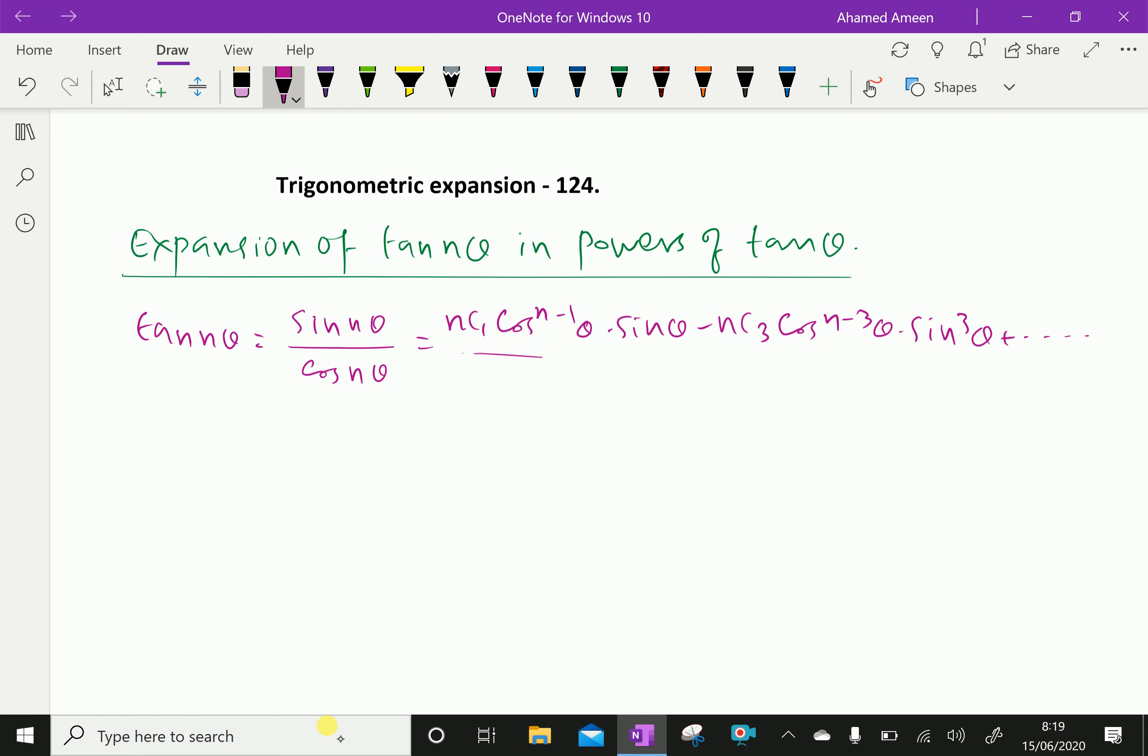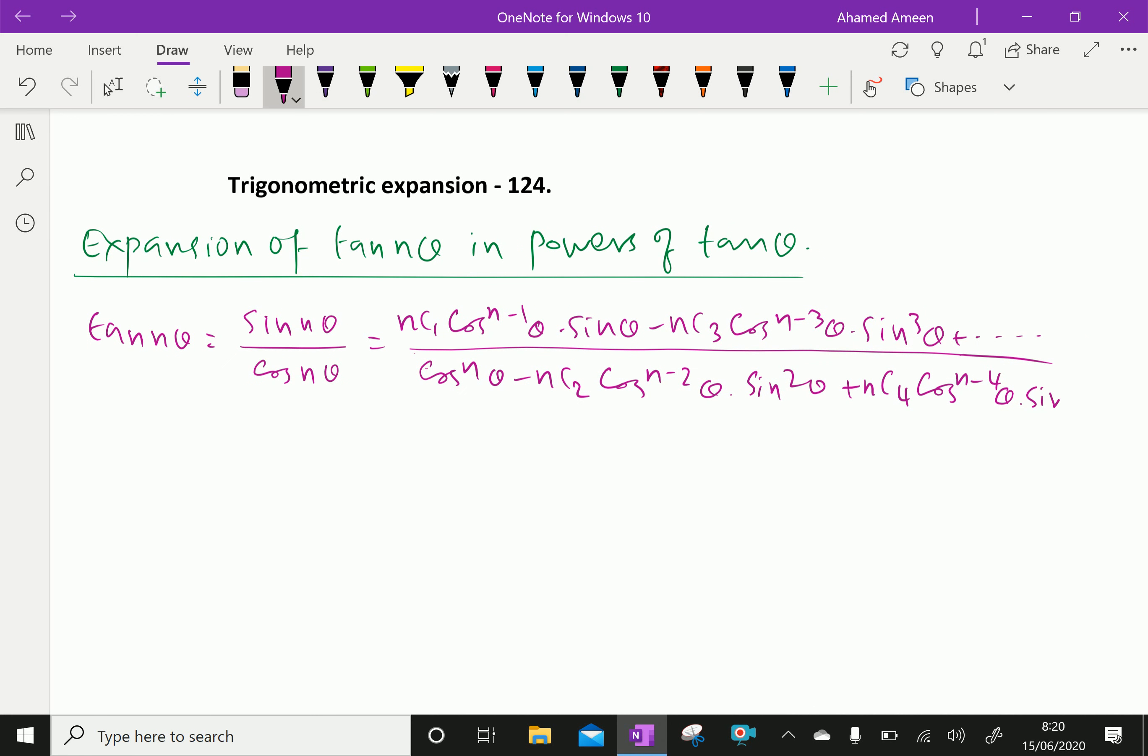In the denominator, we divide by cos n theta. The expansion is cos power n theta minus Nc2 cos power n minus 2 theta sin square theta plus Nc4 cos power n minus 4 theta into sin power 4 theta, and it continues to expand.